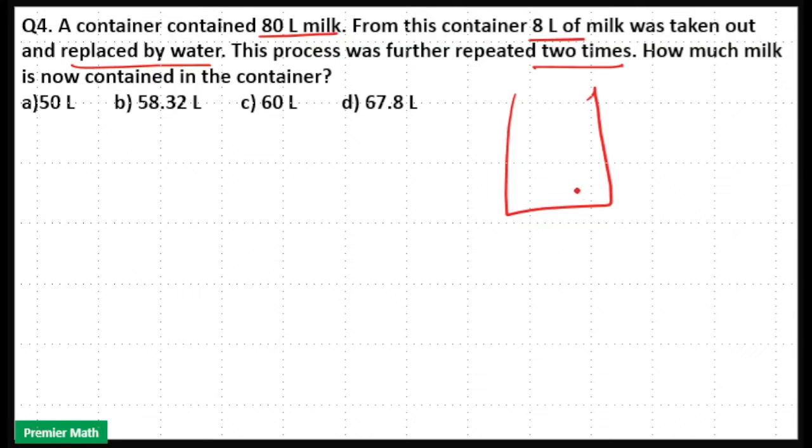So there is a container and it has 80 liters of milk. Now a person took out 8 liters of milk from it and added 8 liters of water to it. This process repeated two times, that is, the process happened three times totally. Now finally we have to find out the final milk present in this container.